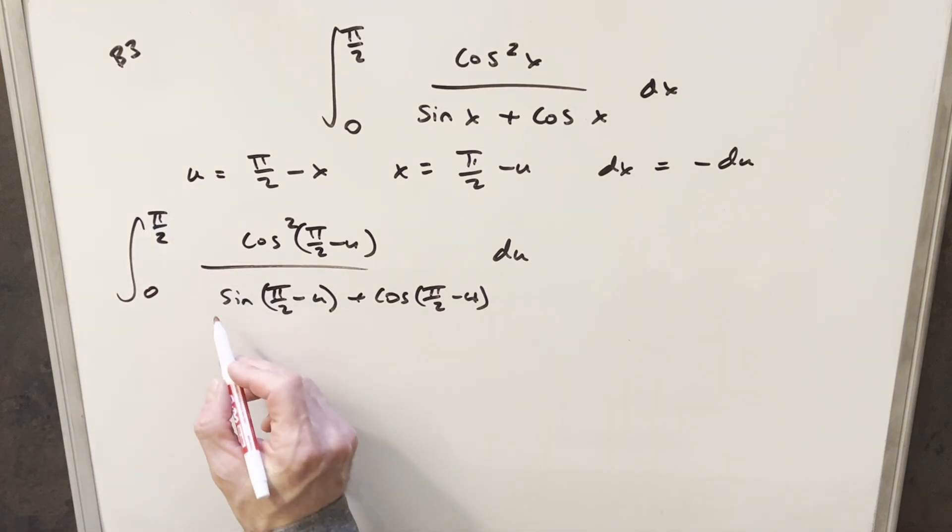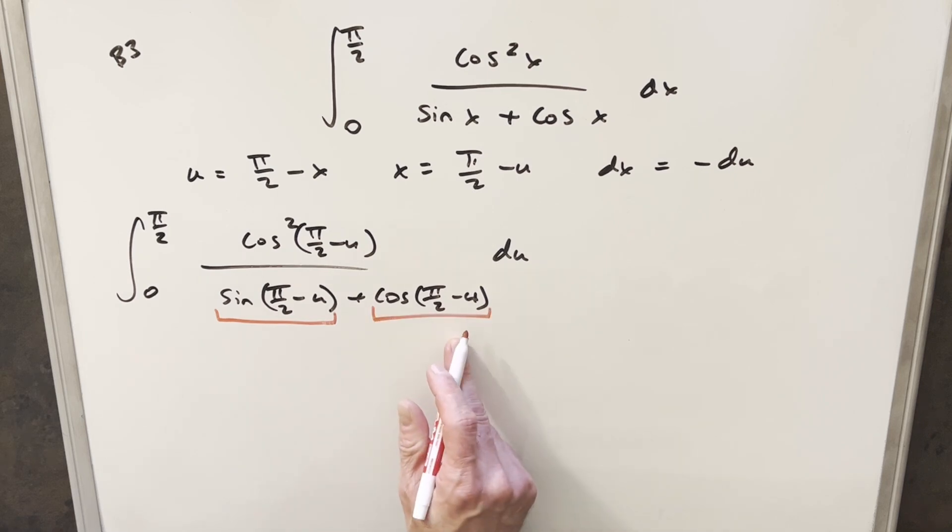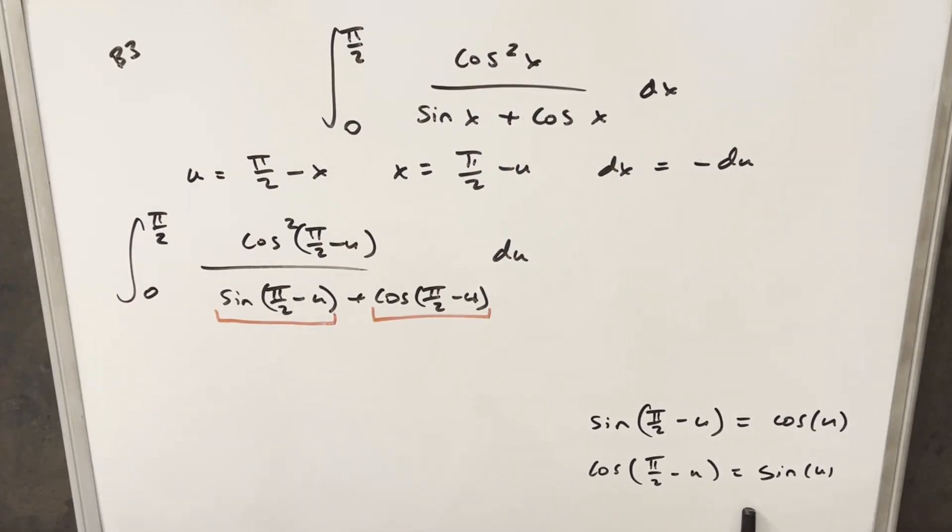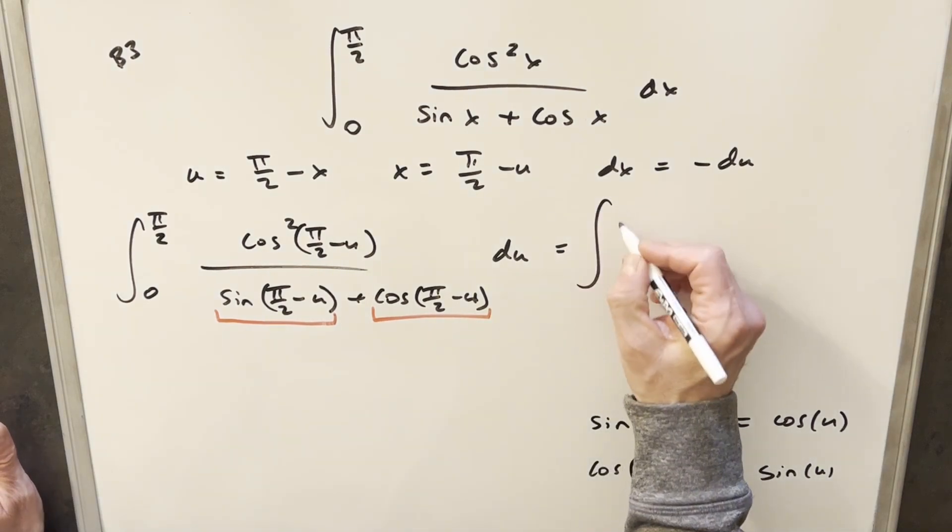But from here, what we want to do is we want to simplify sine π/2 minus u, cosine π/2 minus u. But for each of these, what we have is we can use the complementary angle formula. So we have our complementary angle formulas over here to the right. And so it's just going to flip our sines to cosines and our cosines to sines. So let's just do this and rewrite it.